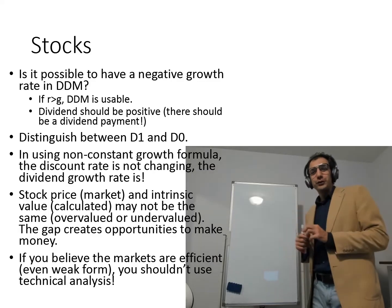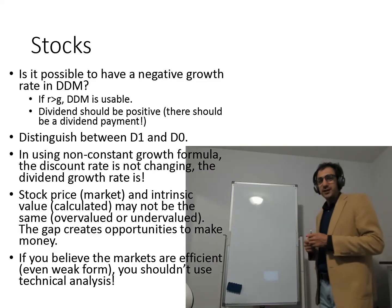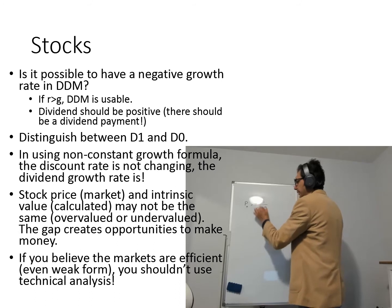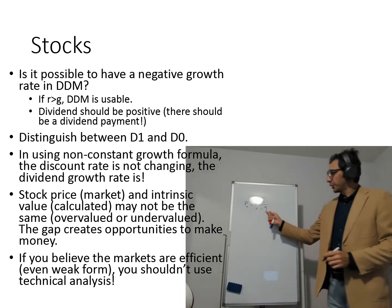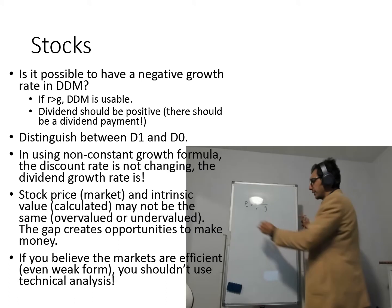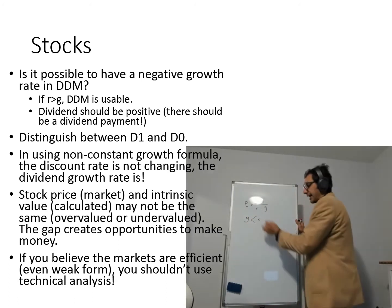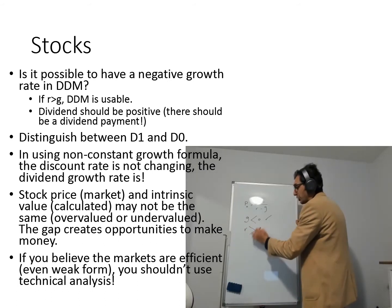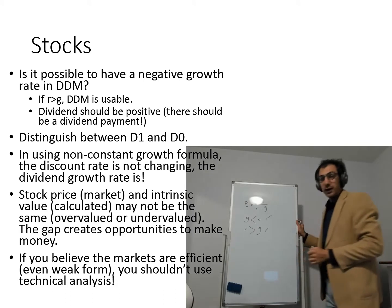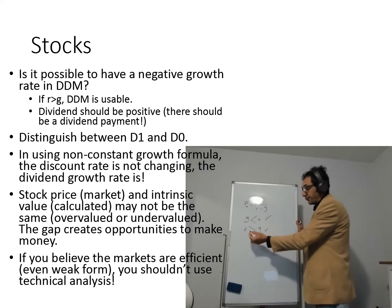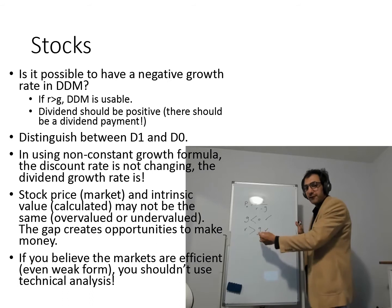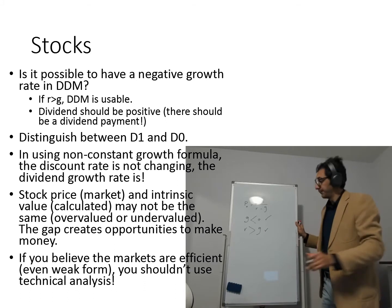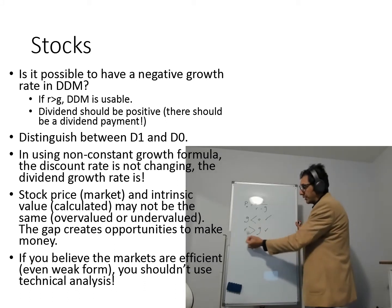The first note is regarding DDM dividend discount model. We talked about the DDM or the Gordon formula. I mentioned that the formula is based on the dividend, the growth rate and the discount rate. The question here is, is it possible to have a negative growth rate? And the answer is yes. As long as R is greater than G, you can use the formula. So R might be 10 percent, G 5 percent, R 5 percent, G minus 2 percent, doesn't matter. You can use the formula and that's totally fine. Just make sure the R is greater than G.